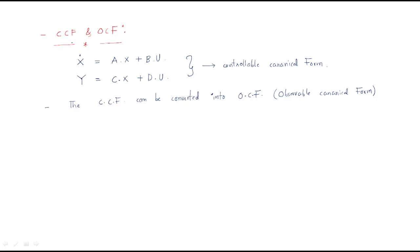In this session we will discuss CCF and OCF. CCF means Controllable Canonical Form. Up to now we discussed problems regarding the state model — the equations x-dot = Ax + Bu and y = Cx + Du. These equations represent the Controllable Canonical Form, and CCF can be converted into OCF, that is the Observable Canonical Form.